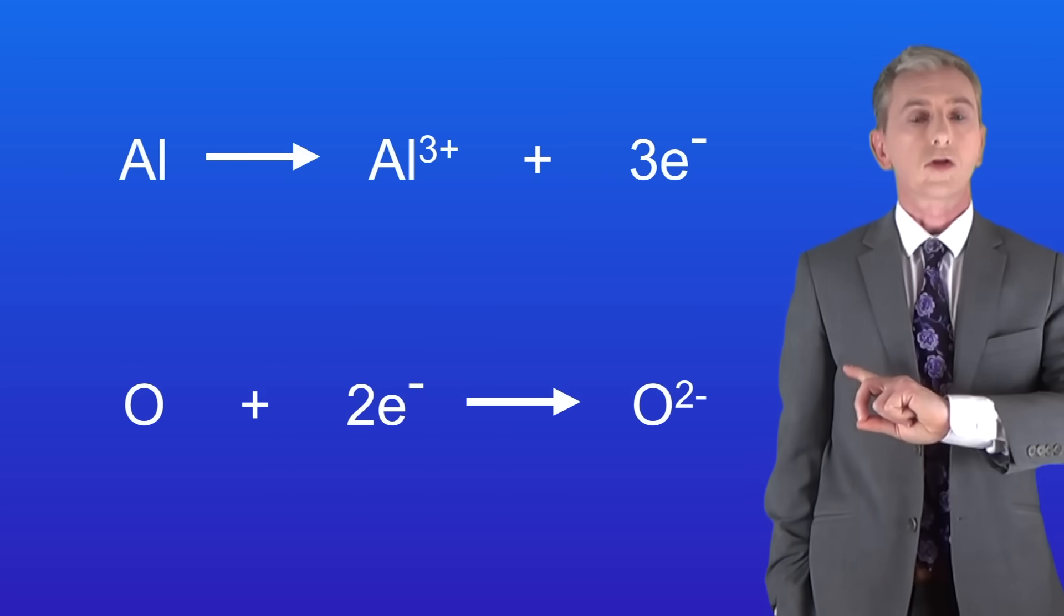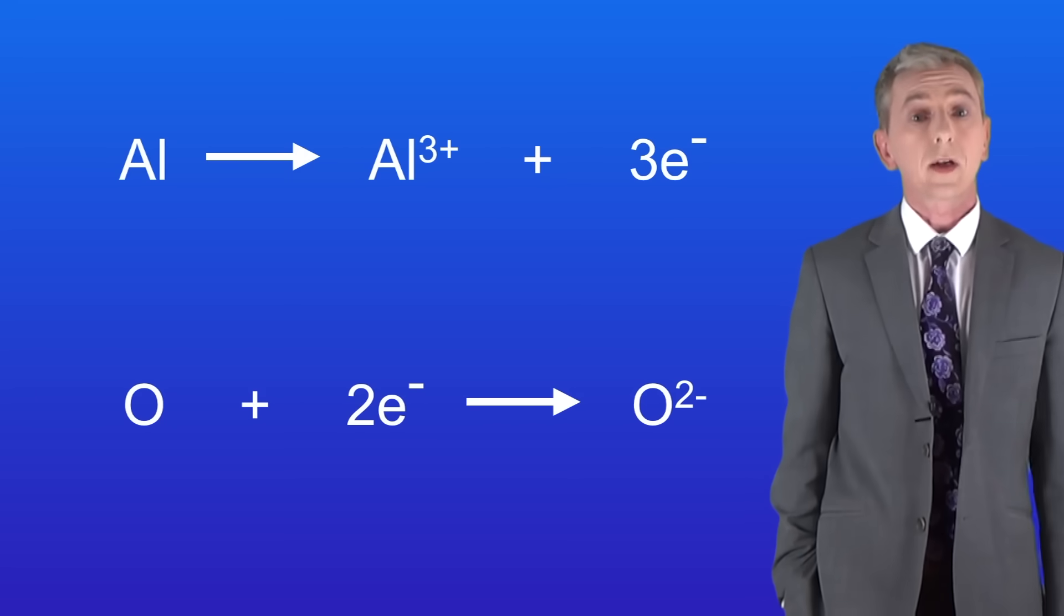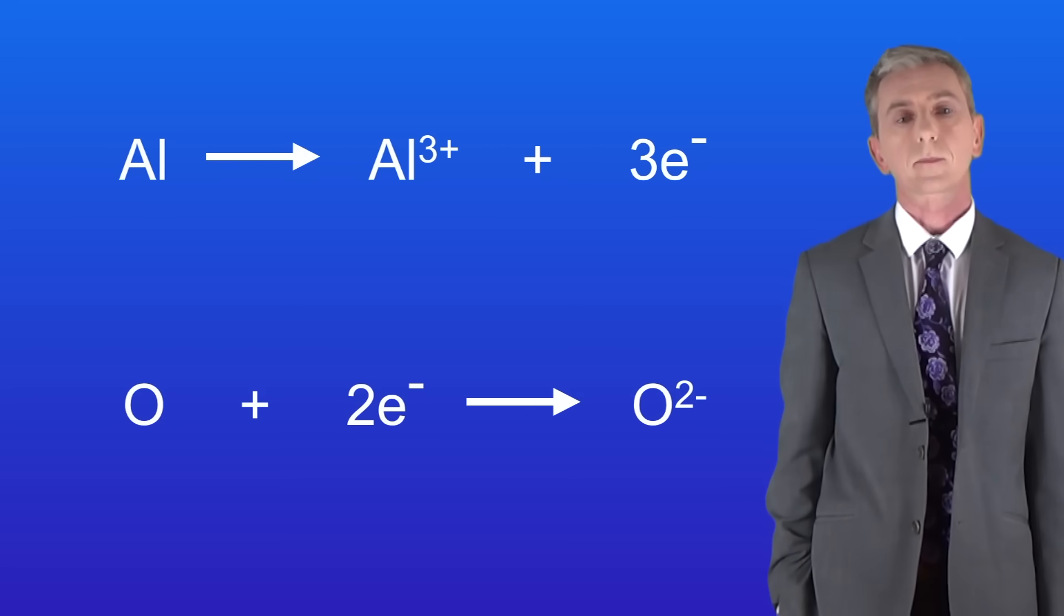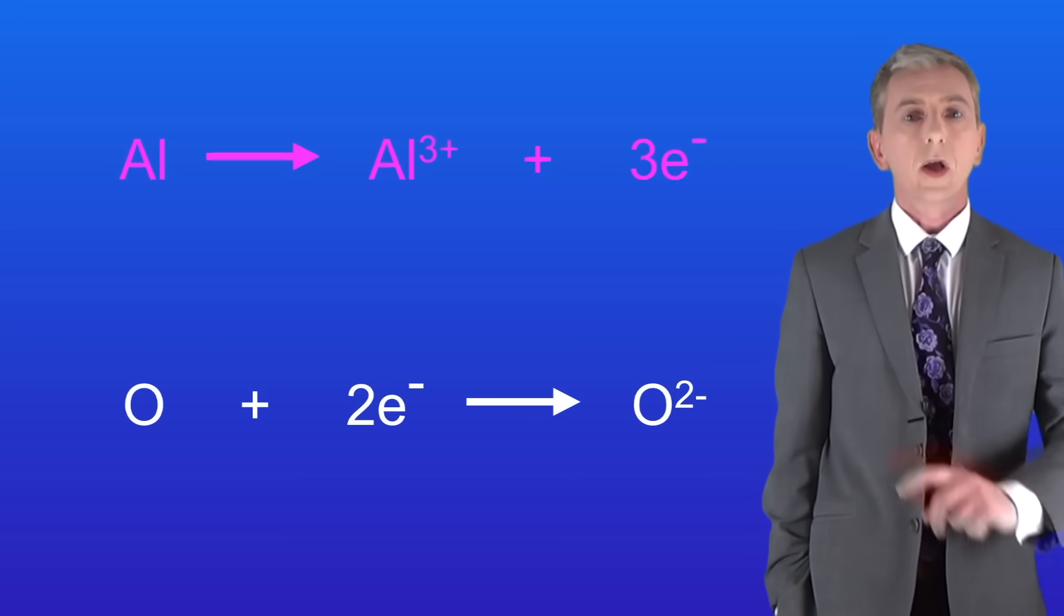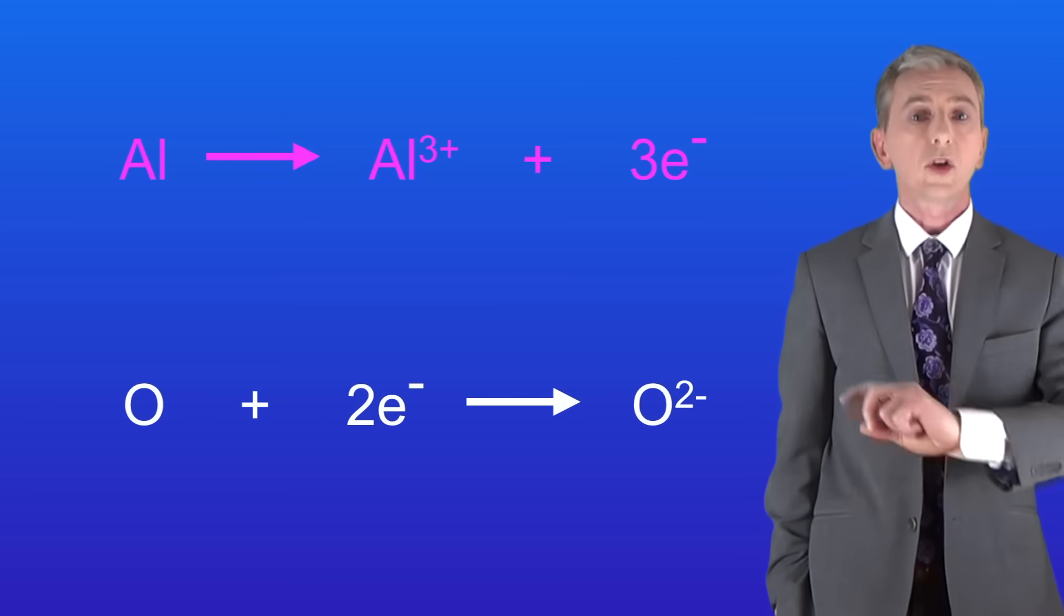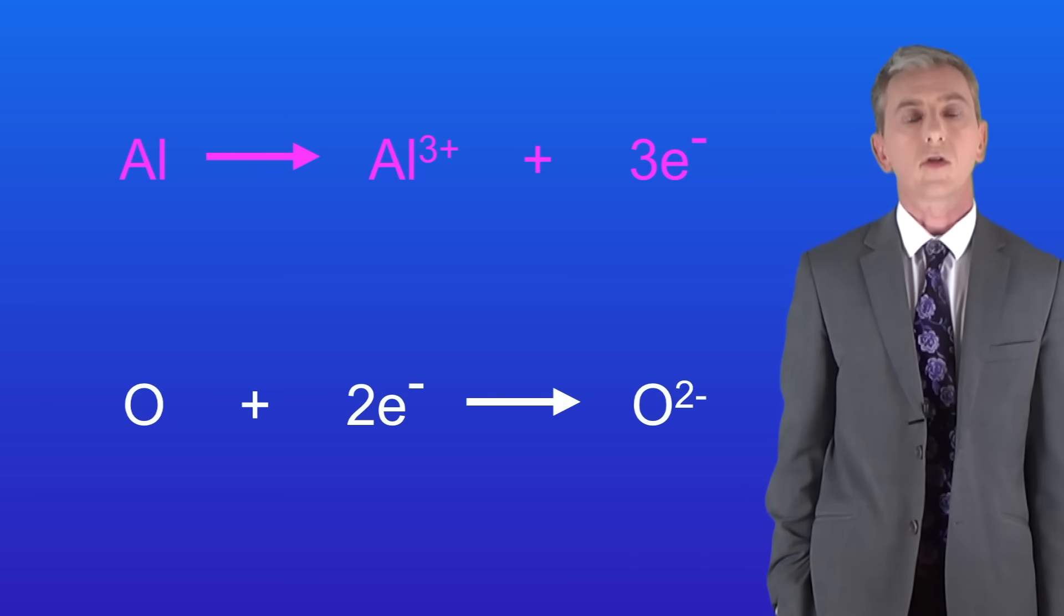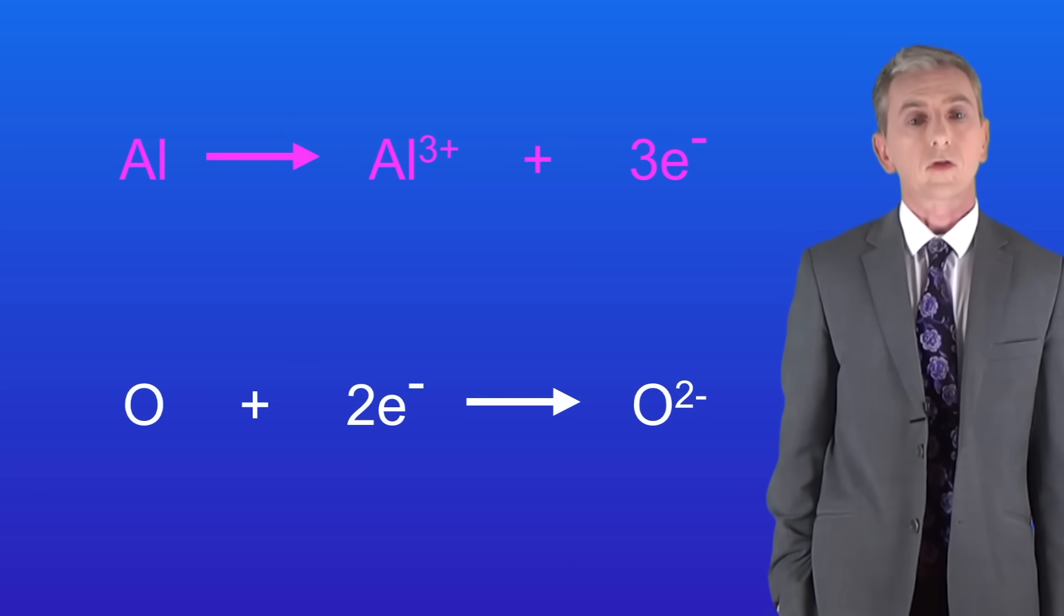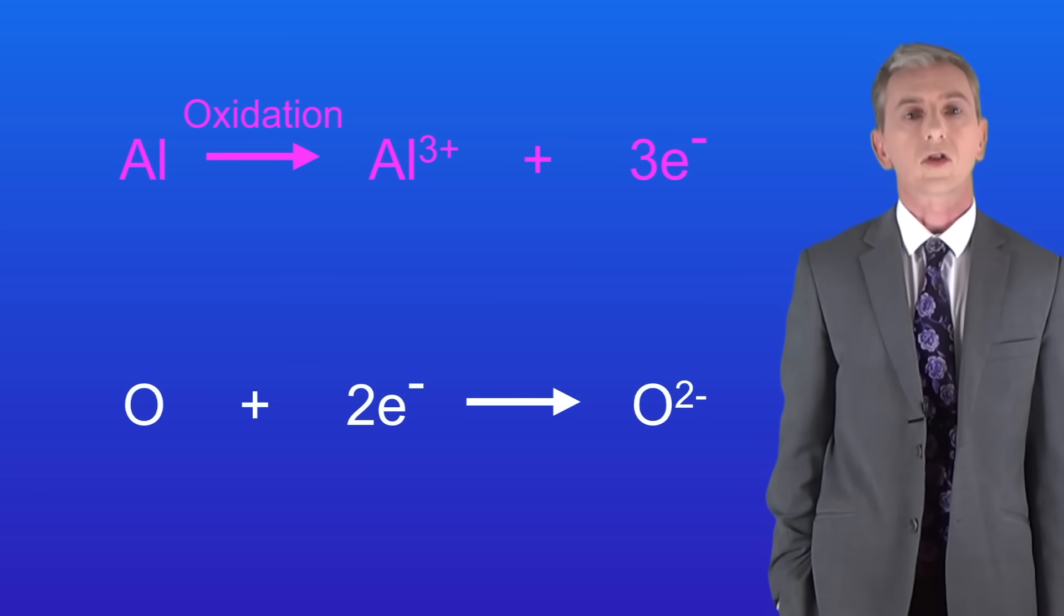Here are two examples for you to try. Pause the video now and work out whether these are oxidation reactions or reduction reactions. Okay, so this half equation shows an aluminum atom losing three electrons to form an aluminum ion. Because the aluminum atom has lost electrons, this is an oxidation reaction.